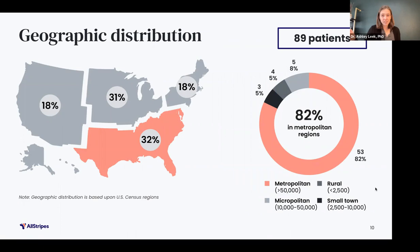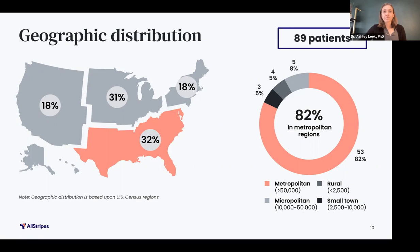On the previous slide, we saw that the majority of our CLA cohort is located within the United States. This slide gives a little more information about where patients are located in the US. The majority of CLA patients in our cohort live in the South, shown in pink, and also in the Midwest. We also found that more than 80% live in large metropolitan urban areas of greater than 50,000 residents. This data is fairly consistent with the geographic distribution of the general US population, although we do have a slightly higher proportion of patients living in the Midwest and slightly more located in urban areas compared to the general population.